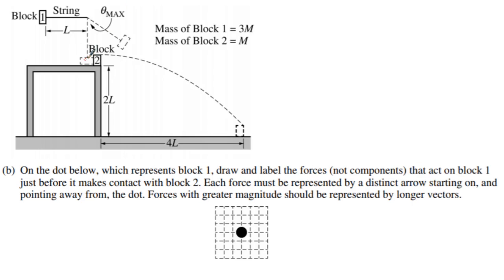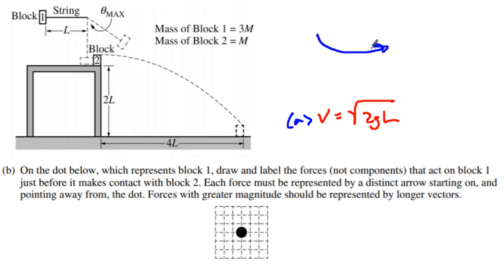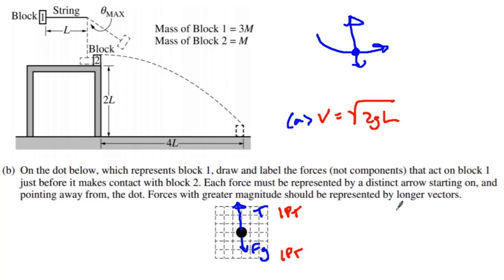Part B asks for the force diagram. Keep in mind, when you have something swinging like this at the bottom, there is the force of gravity pointing down, but there is also a tension much greater pointing up. This tension provides the centripetal force — it is the net force. Tension must be greater than the force of gravity. You get 1 point for the force of tension being larger, and 1 point for the force of gravity being smaller. That's 2 points for B.